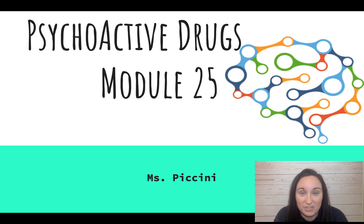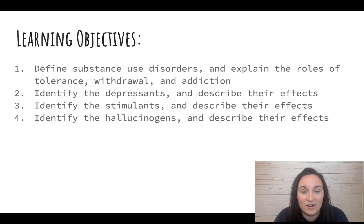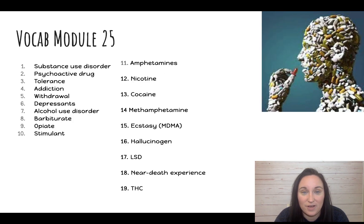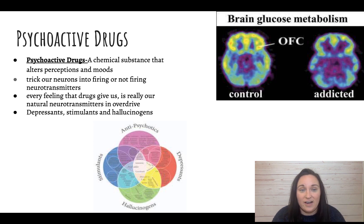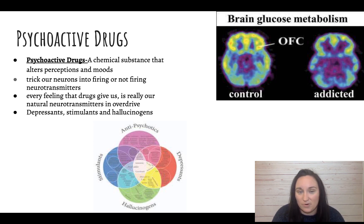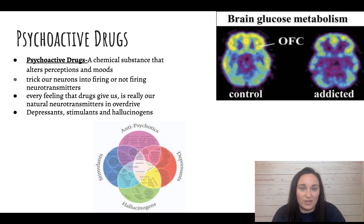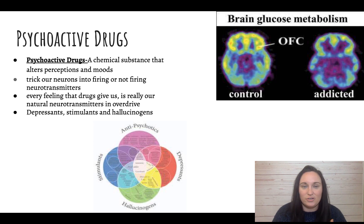Welcome to Mod 25 of Unit 5: Psychoactive Drugs. Here are your learning objectives and vocab. Psychoactive drugs are chemical substances that alter our perception or our mood. They work on our brains by tricking them, because they mimic our natural neurotransmitters to encourage certain reactions in our brain.